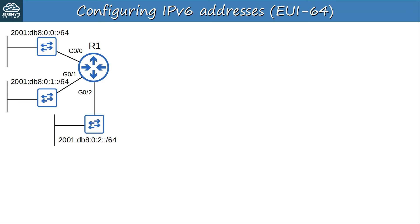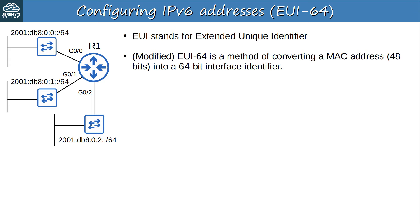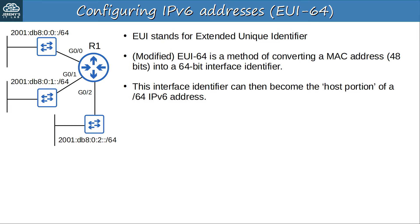First up is configuring IPv6 addresses using a method called EUI-64. EUI stands for Extended Unique Identifier. When using this concept in IPv6, the technically correct term is modified EUI-64, but usually it's just referred to as EUI-64. EUI-64 is a method of converting a 48-bit MAC address into a 64-bit interface identifier, and this interface identifier can then become the host portion of a slash-64 IPv6 address.